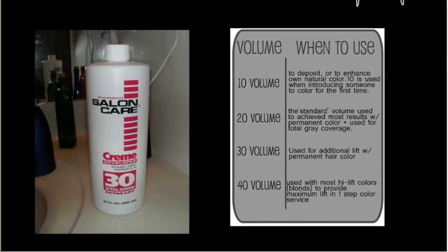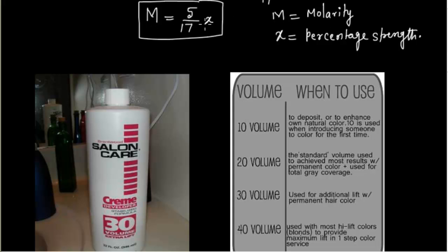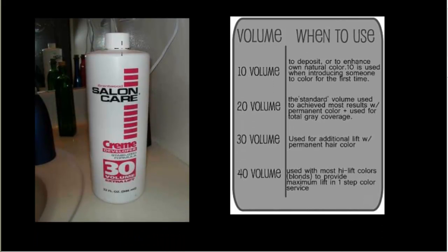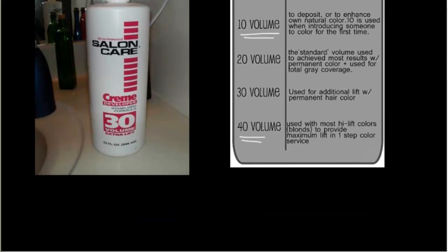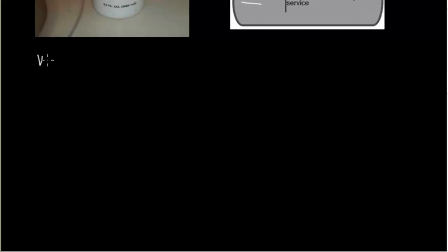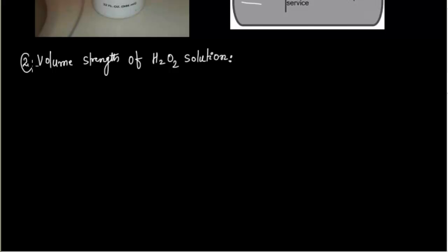We have related molarity and percentage strength. Now we come to volume strength. On H2O2 bottles you often see 30 volume, 20 volume, or 40 volume — that is called volume strength. 10 or 20 volume is more dilute, while 40 volume is more concentrated H2O2. This is the second way to give the strength of H2O2 solution.